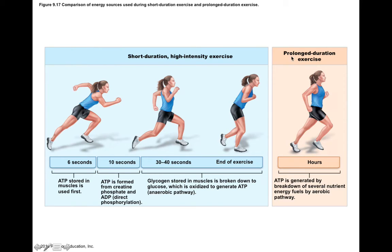This differs from prolonged-duration exercise like jogging, which can occur for hours. If you jog slowly enough that you don't run out of oxygen within your muscle tissue, ATP can be generated by the breakdown of several different nutrient sources through an aerobic pathway, which supplies much more ATP and allows the activity to continue for a much longer duration.